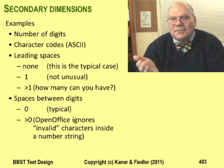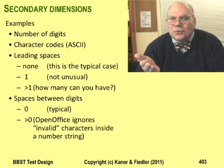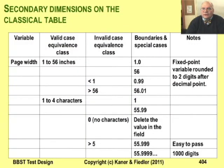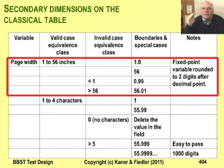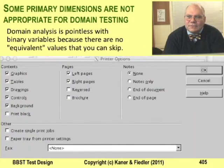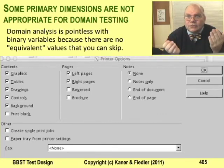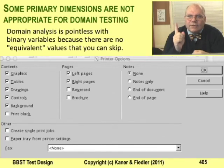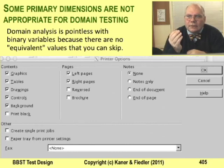Here are some more examples of secondary dimensions. How many spaces can you type in front of the number you're going to enter? How many spaces can you type between any digits that you enter? What about minus signs — how many of those can you enter? You can show secondary dimensions on a traditional boundary analysis table. When I do this, I start with the primary dimension, work through it completely, and then work through the secondary dimensions one at a time. Different variables have different types of primary dimensions. Page width is an example of a floating point variable. Other variables are integers, or dollars and cents, or strings. You can do a domain analysis with any of these, but not with binary variables. If the only two values of a variable are yes or no, you're going to have to test both of them — neither one is equivalent to the other, so you can't create equivalence classes to sample from.